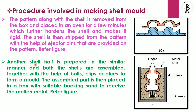Another shell half is prepared in a similar manner. Both shell halves are assembled together with the help of bolts, clips, or glue to form a mold. The assembled part is then placed into a box with suitable backing sand to receive the molten metal. Shell number 1 and shell number 2 are assembled with the help of clamps and placed into a flask, which is then filled with molten metal.